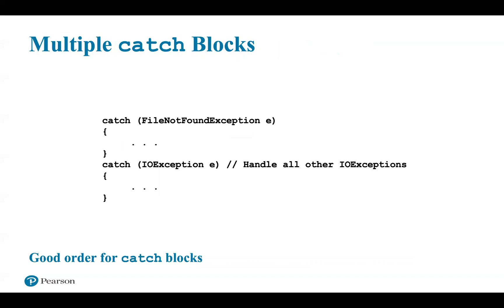To handle an exception, we first identify the Java statements that cause it, and we must decide which exception to look for — a method's documentation and throws clause will tell us what checked exceptions might occur. The code to handle an exception consists of two pieces: the try block, which contains the statements that might throw an exception, and one or more catch blocks, each containing code to react to a particular type of exception.